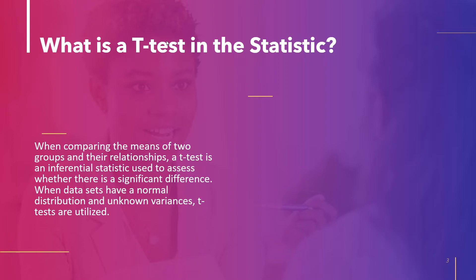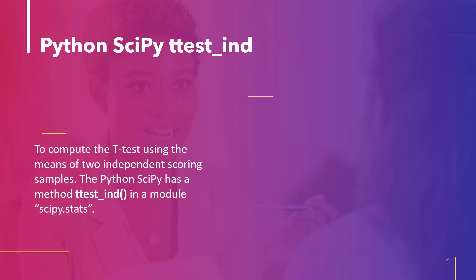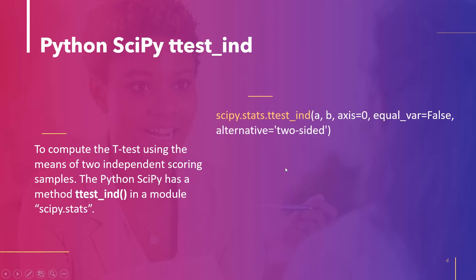In this tutorial we will compute the t-test of the independent sample using Python scipy. The scipy.stats module contains a method called ttest_ind. To calculate the t-test using the means of two independent score samples, this is a test of the null hypothesis that the average value of the two independent samples are the same. The syntax is: scipy.stats.ttest_ind, where parameters are a, b.